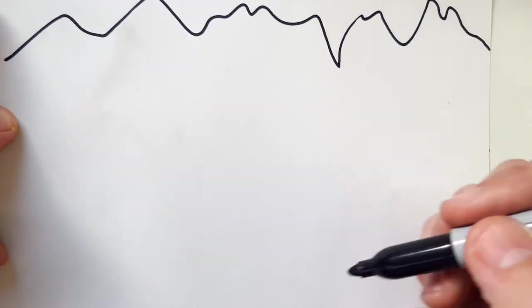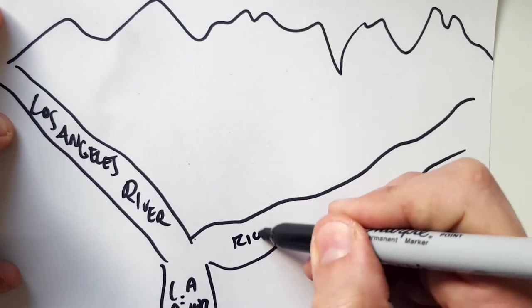This is the history of Bell Gardens. Luckily this time with Bell Gardens we actually do have a tribe of the Tongva Indians that lived in the area.